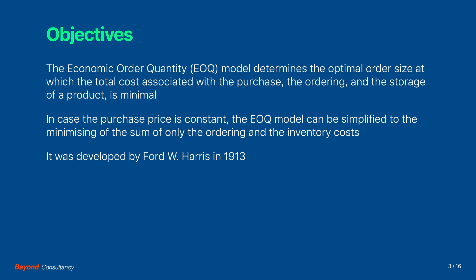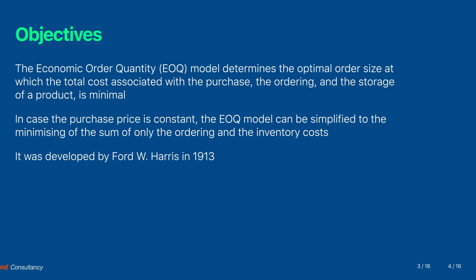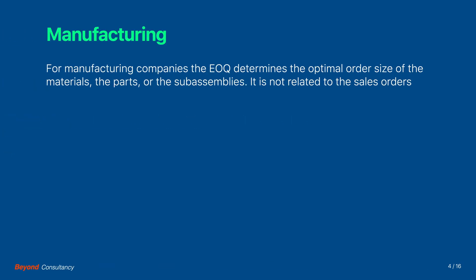The model was developed by Ford W. Harris in 1913. For manufacturing companies, the economic order quantity determines the optimal order size of the materials, the parts or the subassemblies, depending on the company's position in the added value chain. It is not related to the size of the sales orders.